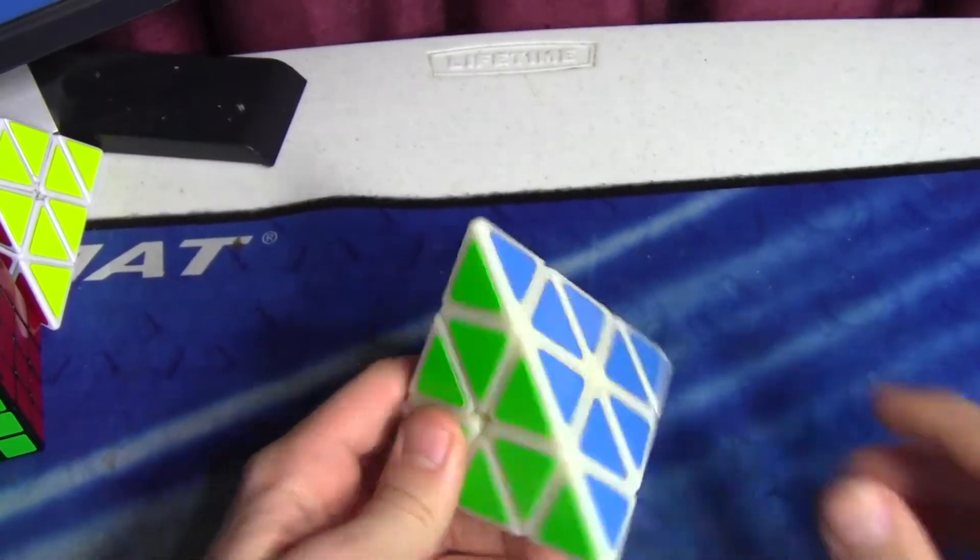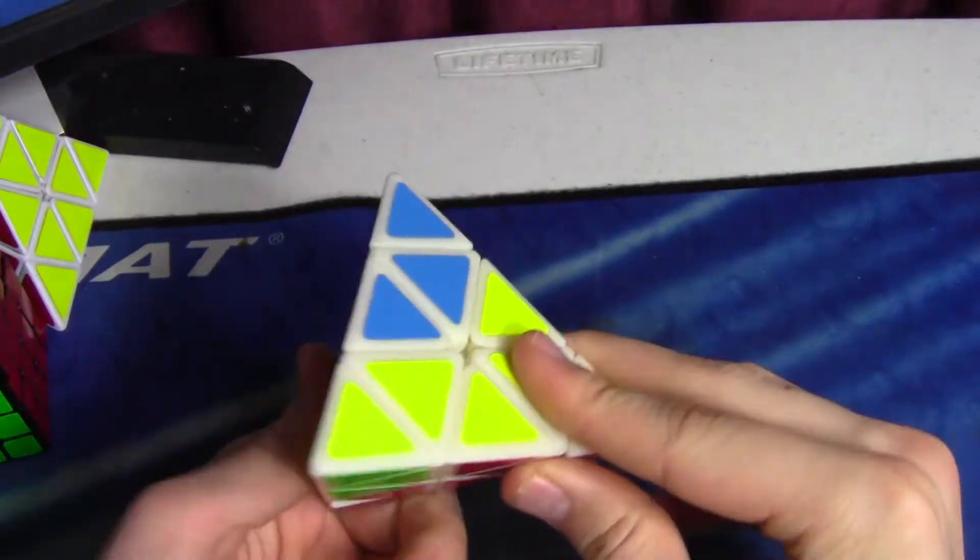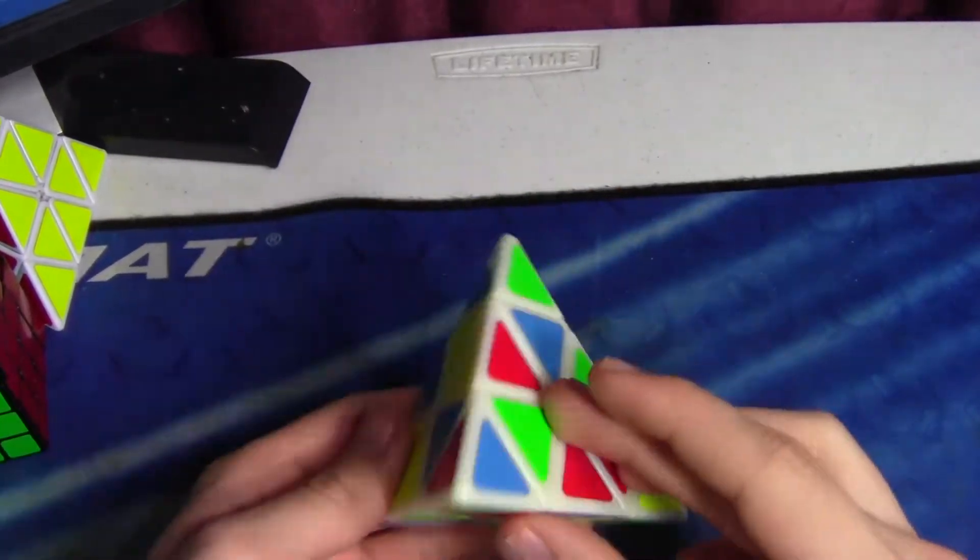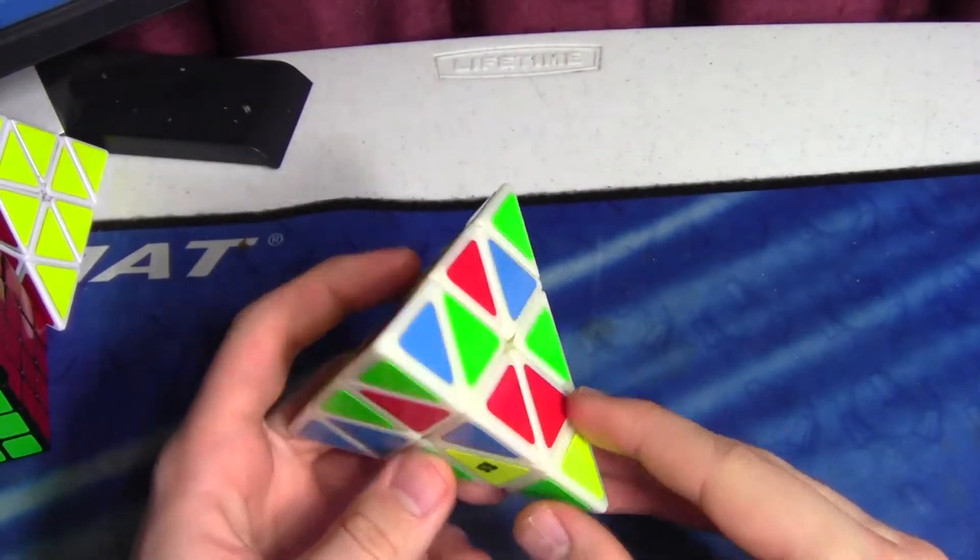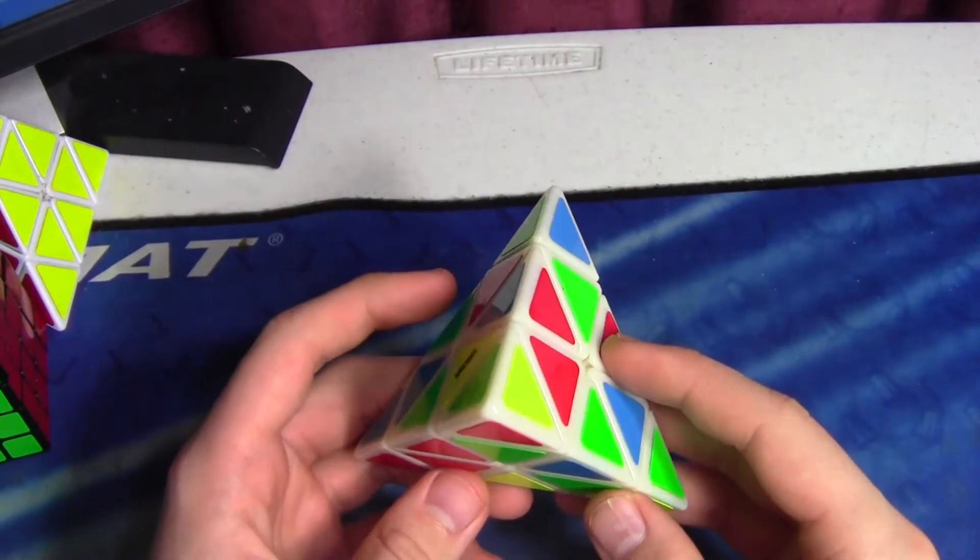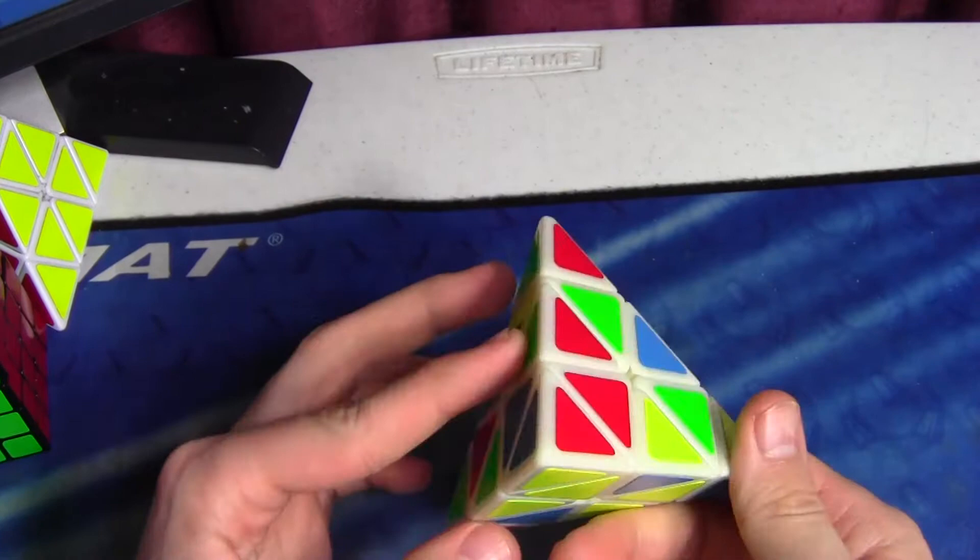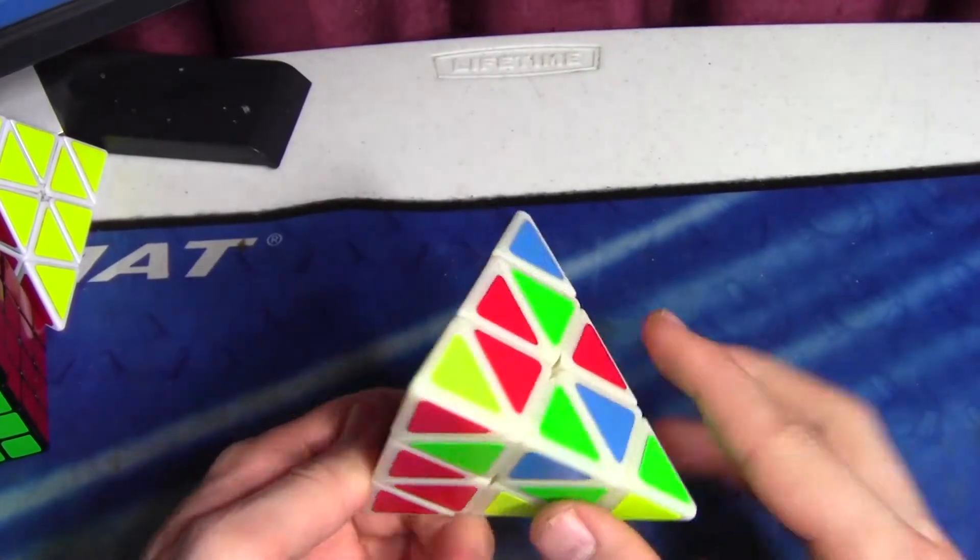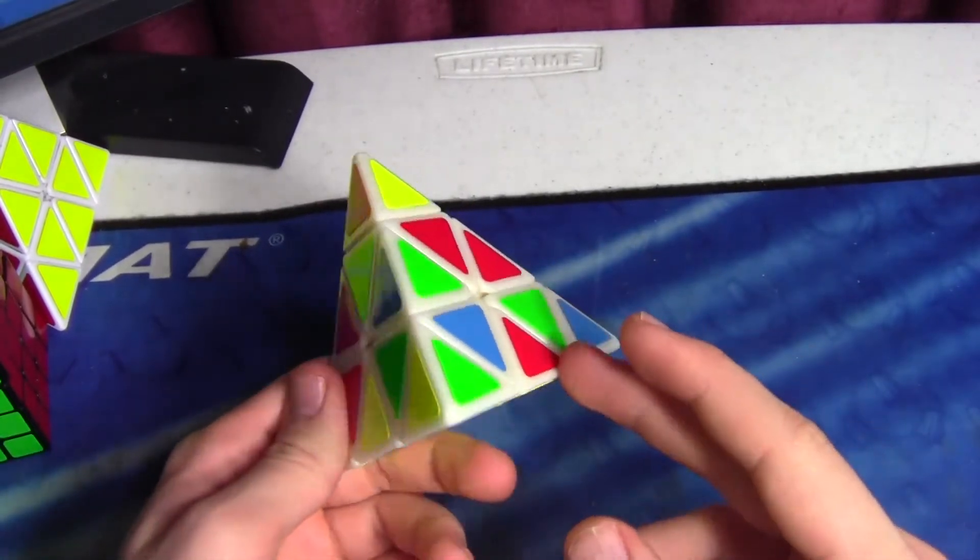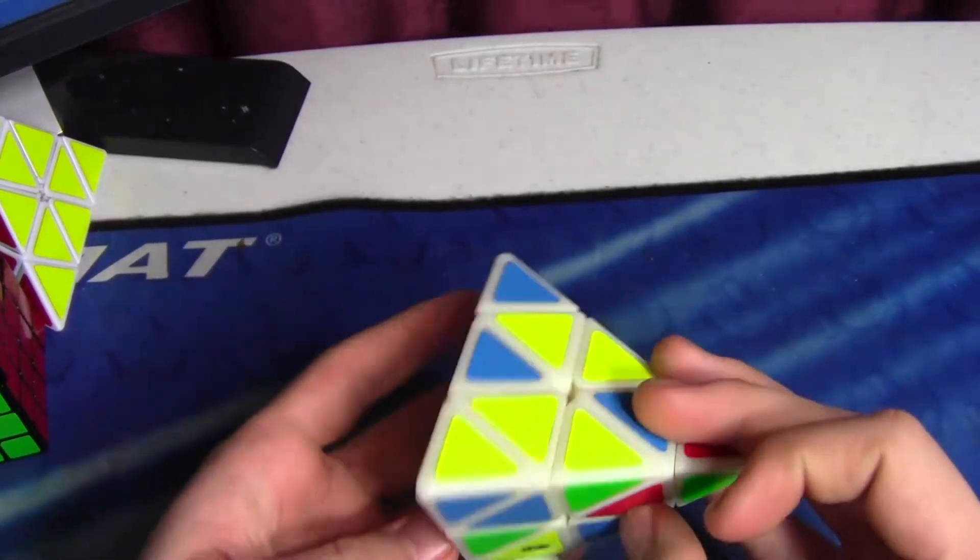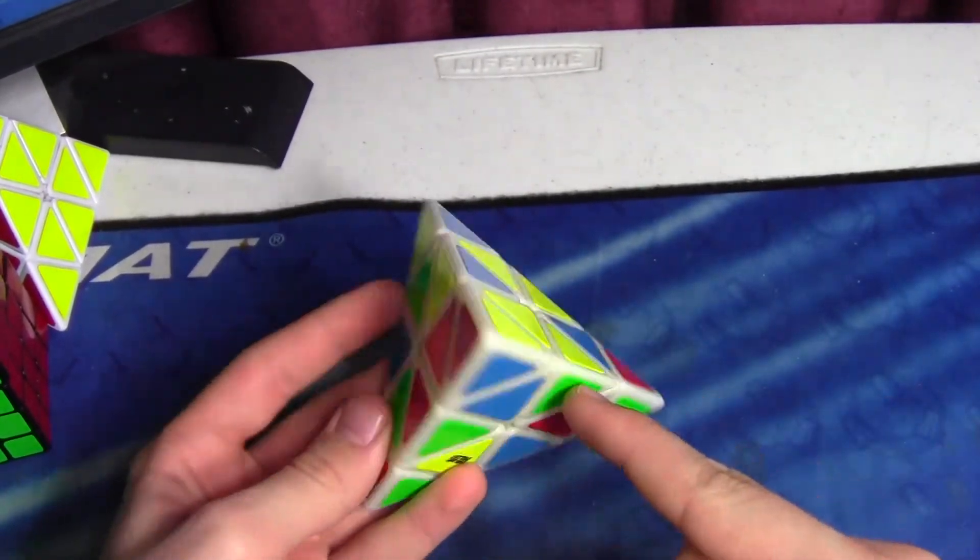Hello, this is another Pyraminx walkthrough solve video. This is the first scramble - I got 4.40 on this. I remember being quite confused as to what face I should do because everything that I could twist into place would be flipped and nothing worked out well.